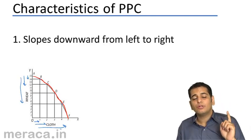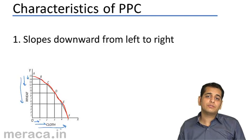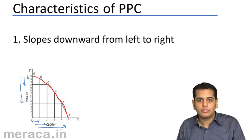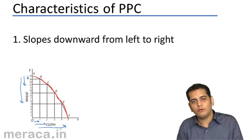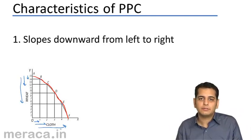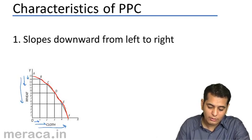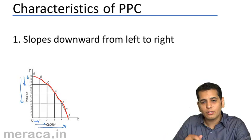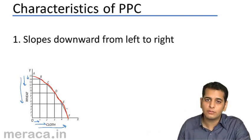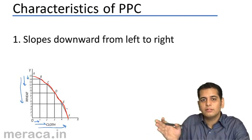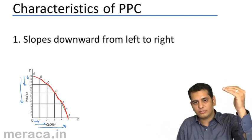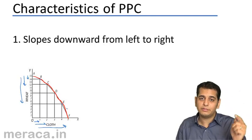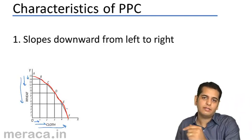So, this is one of the most important properties of PPC that PPC would always move downwards. It moves downwards from left to right because you are transforming, you are substituting. In place of wheat, you are going on producing cloth. So, it moves from left to right and production of wheat is decreasing, so it moves downwards. This is why PPC moves downwards from left to right.